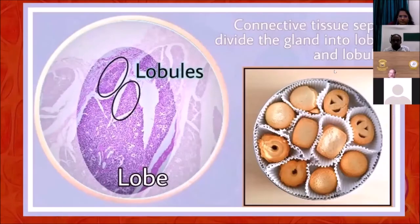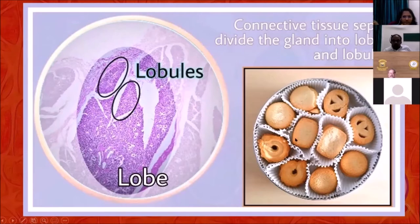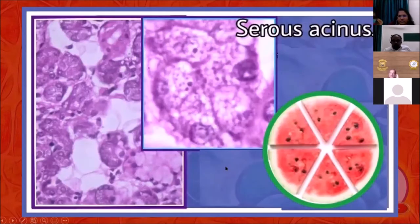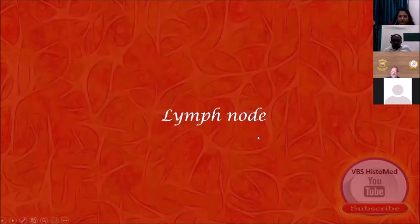When we talk of the lobulation pattern, the lobules, or the internal architecture of glands, butter paper and its partition may be a good way of understanding, and if I tell you the biscuits and chocolate are inside, it makes the lobules even more interesting. This cut piece of watermelon may be one of the best examples to understand the pyramidal architecture of a cell.